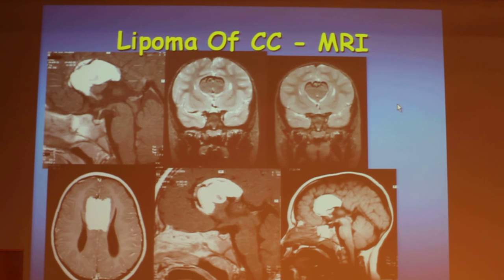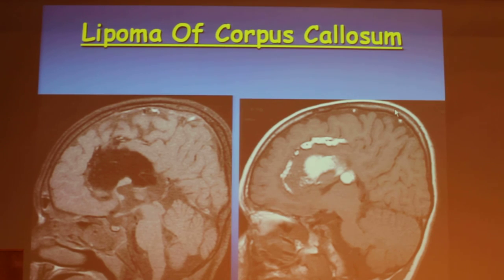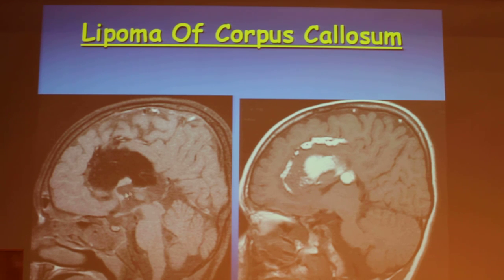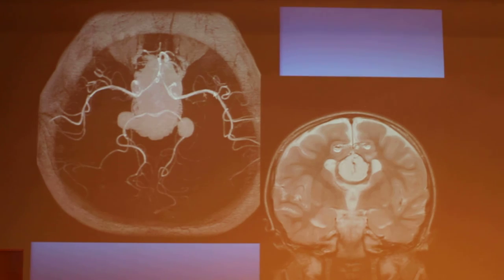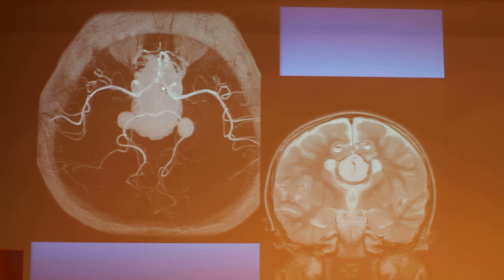We use all available techniques to prove that it is fat. It actually looks like a mass; however, it doesn't cause any mass effect. Here is an example of lipoma of the corpus callosum with fat suppression, and we see what is left of the corpus callosum. Despite the apparent mass, it doesn't cause any mass effect on the vessels — the circle of Willis is unaffected.